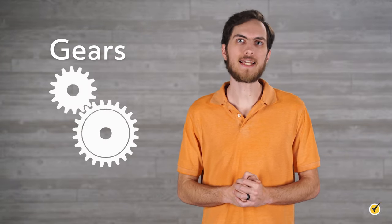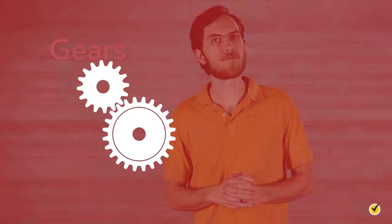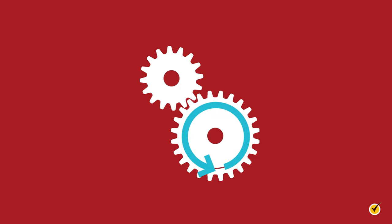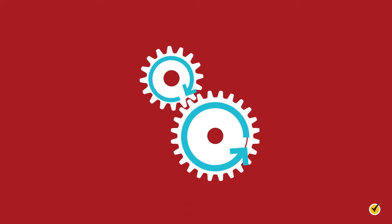Now let's talk about a special kind of wheel: the gear. Gears use interlocking teeth to move other gears, and are often used to change the direction or speed of a system. We have two interlocking gears of different sizes. If the larger of the two is being turned by an axle in its center, which makes it turn counterclockwise, the smaller gear will start turning in the clockwise direction, and since its circumference is smaller, it will turn faster than the larger gear and with less force.